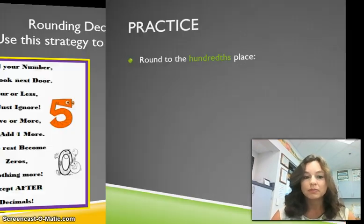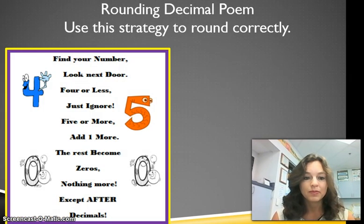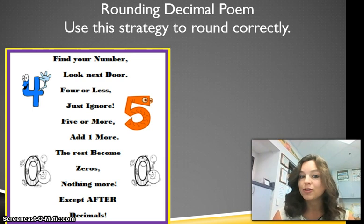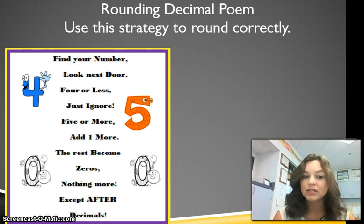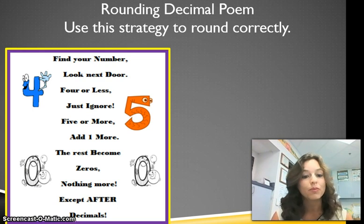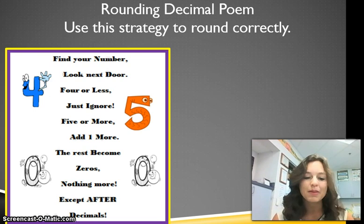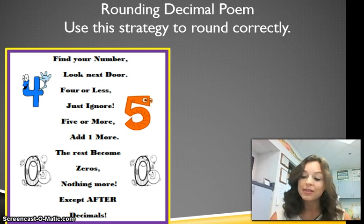Let's look at our poem again: find your number, look next door, 4 or less just ignore, 5 or more add one more, the rest become zeros, nothing more — except after decimals, where we don't have to add the zeros.